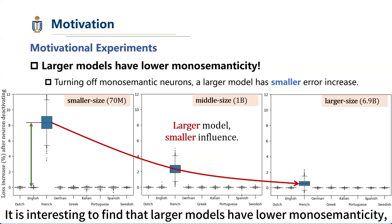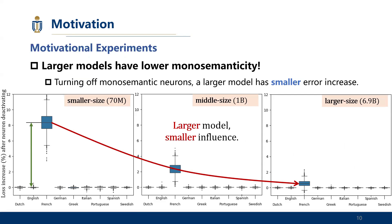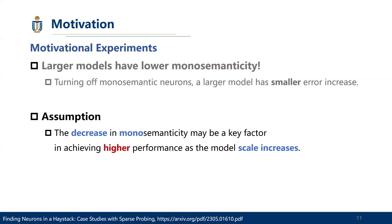It is interesting to find that larger models have lower monosematicity, which had a lower performance drop if a monosemantic neuron is turned off. Existing evidence leads to an assumption that the decrease in monosematicity may be a key factor in achieving higher performance as the model scale increases.